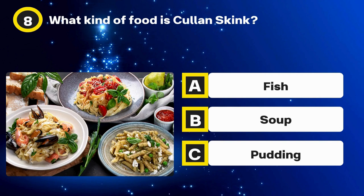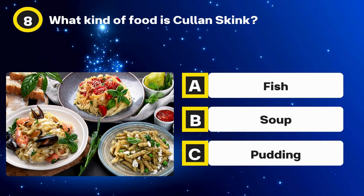Question 8. What kind of food is Cullen Skink? Options: Fish, Soup, Pudding.